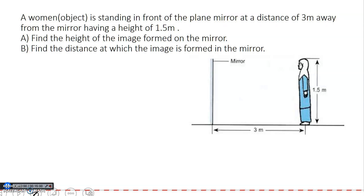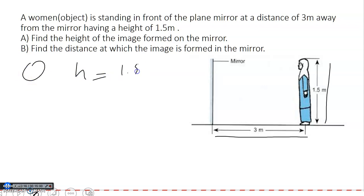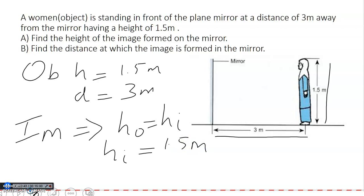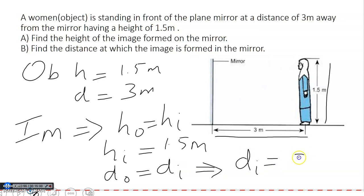A woman is standing in front of a plane mirror at a distance of 3 meters away. The object has a height of 1.5 meters and a distance of 3 meters. For the image: the height of the object equals the height of the image, so the height of the image is 1.5 meters. The distance of the object equals the distance of the image, so the distance of the image is 3 meters.